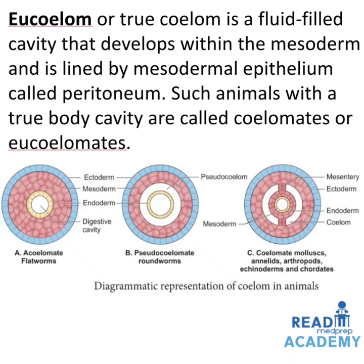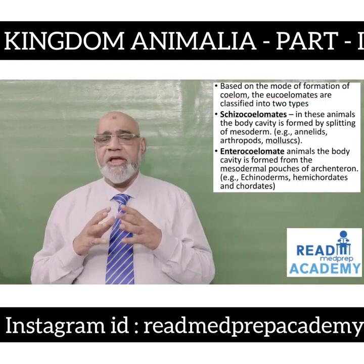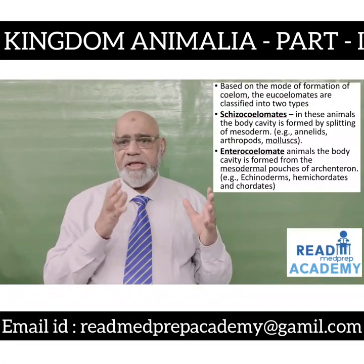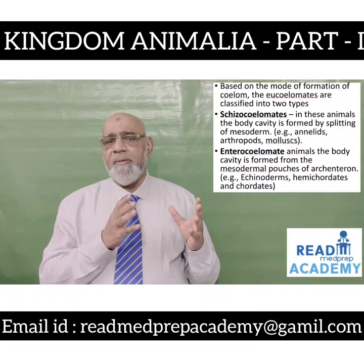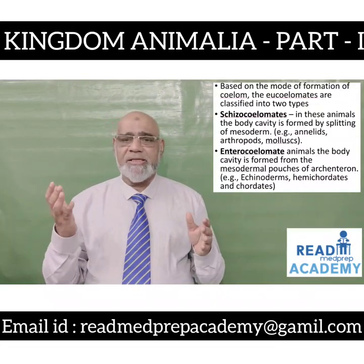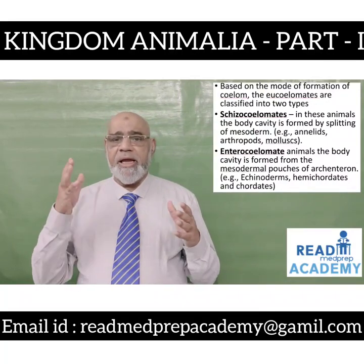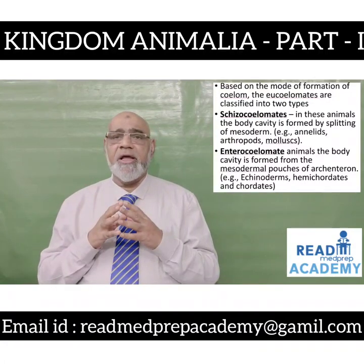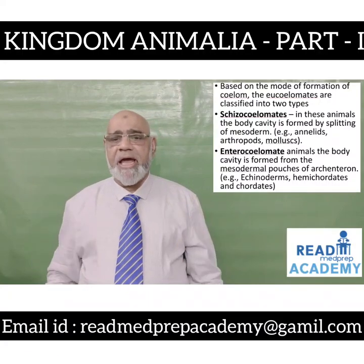Coelomates, or eucoelomates, include molluscs, annelids, arthropods, echinoderms and chordates. They have an ectoderm, endoderm and mesoderm, which is split by the mesentery forming the peritoneum. Based on the mode of formation of coelom, eucoelomates are classified into two types: schizocoelom, in which the body cavity is formed by splitting of the mesoderm — examples: annelids, arthropods and molluscs; and enterocoelom, in which the body cavity is formed from the mesodermal pouches of the archenteron — examples: echinoderms, hemichordates and chordates.